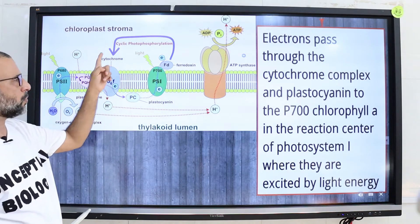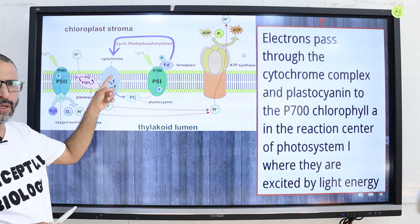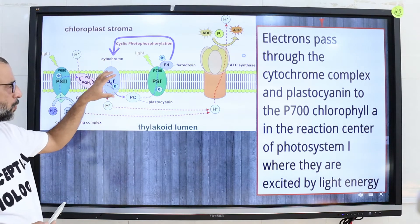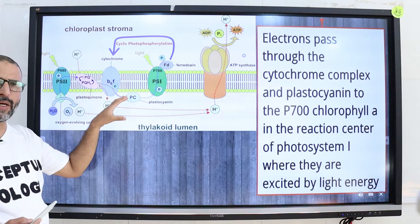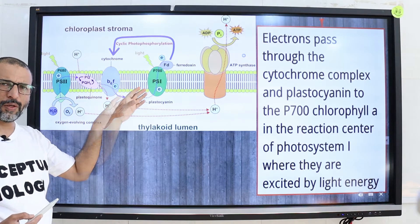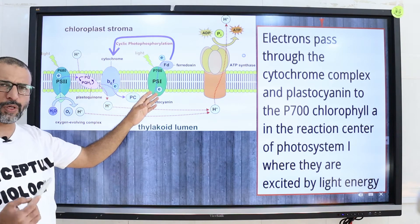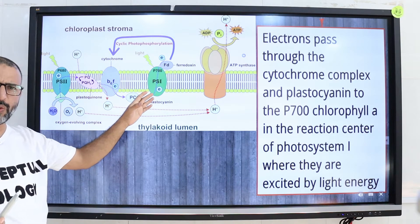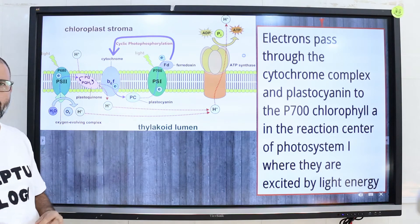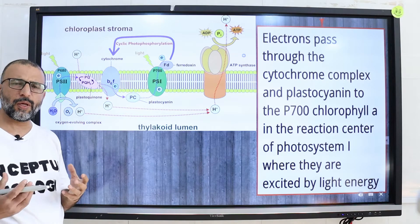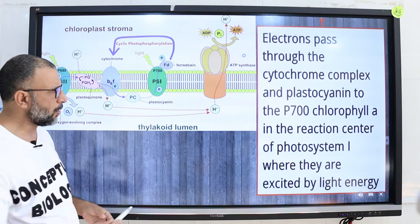From the cytochrome complex, electrons move to a mobile protein carrier called plastocyanin, and then eventually return back to the P700 chlorophyll A molecule in the reaction center of photosystem 1, where they are excited by light energy.